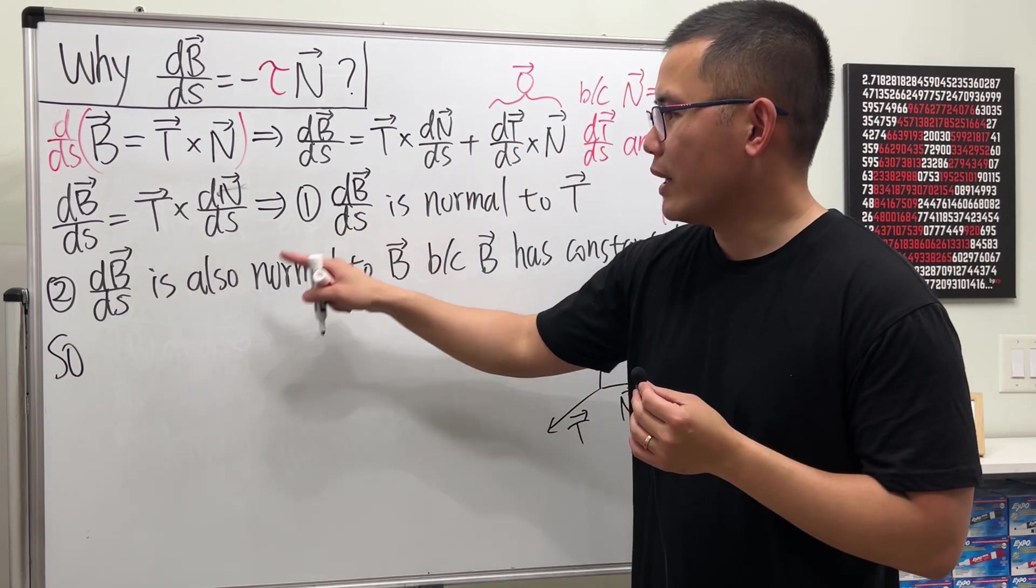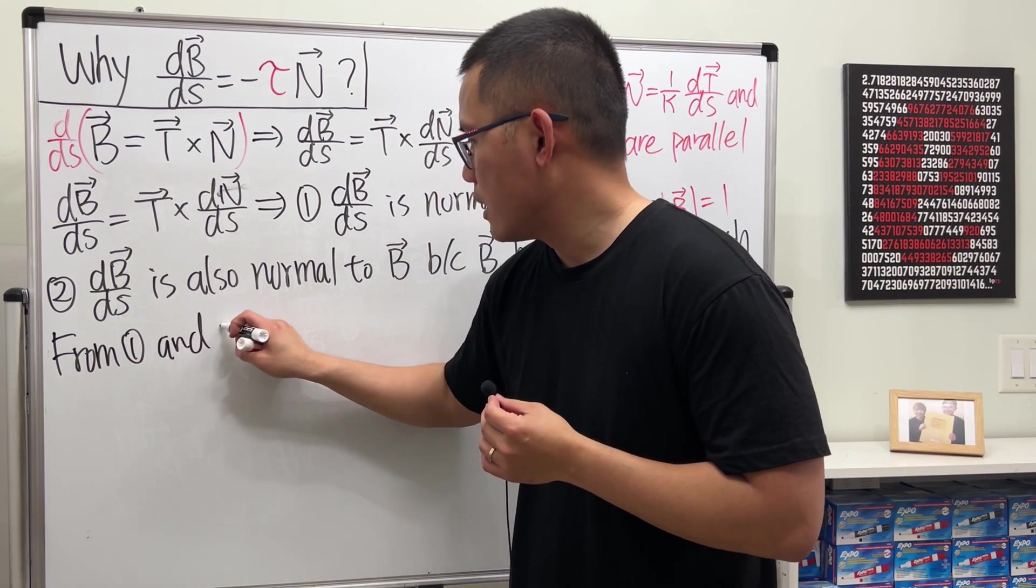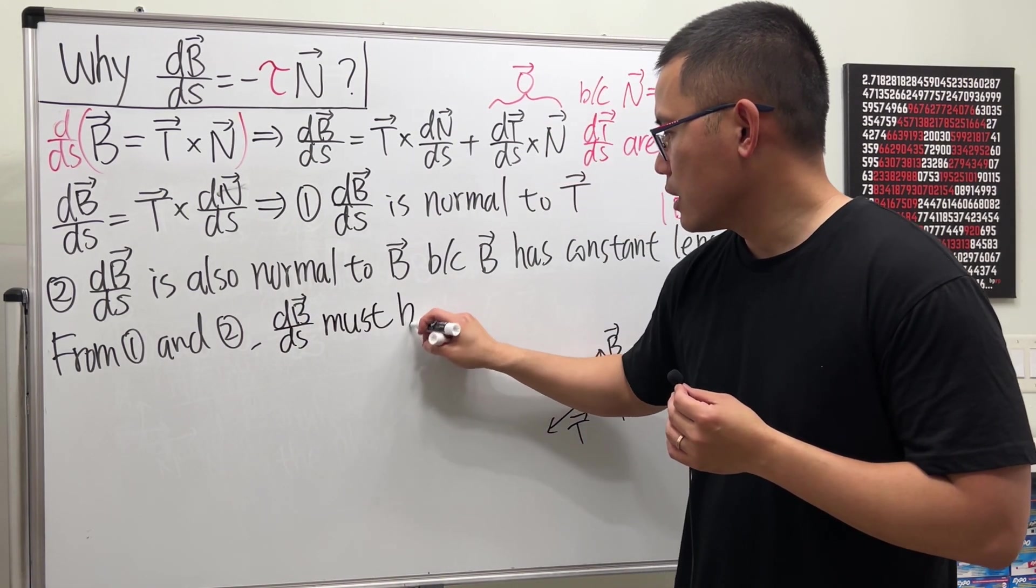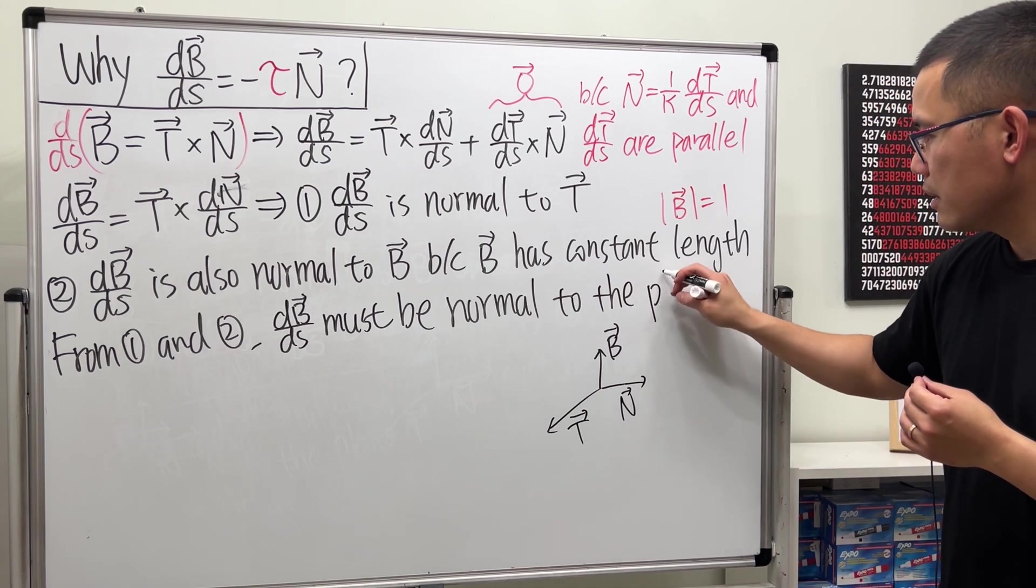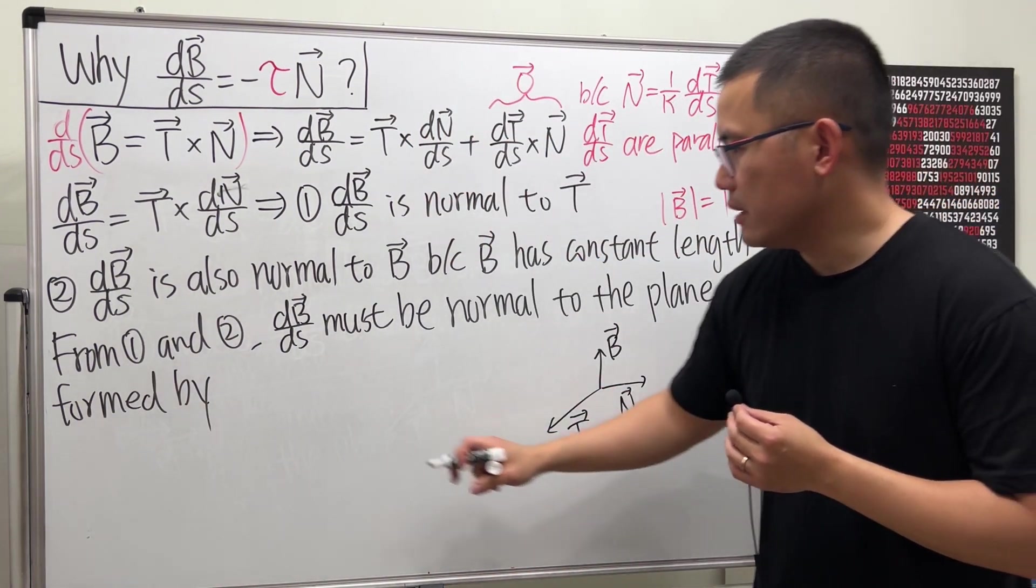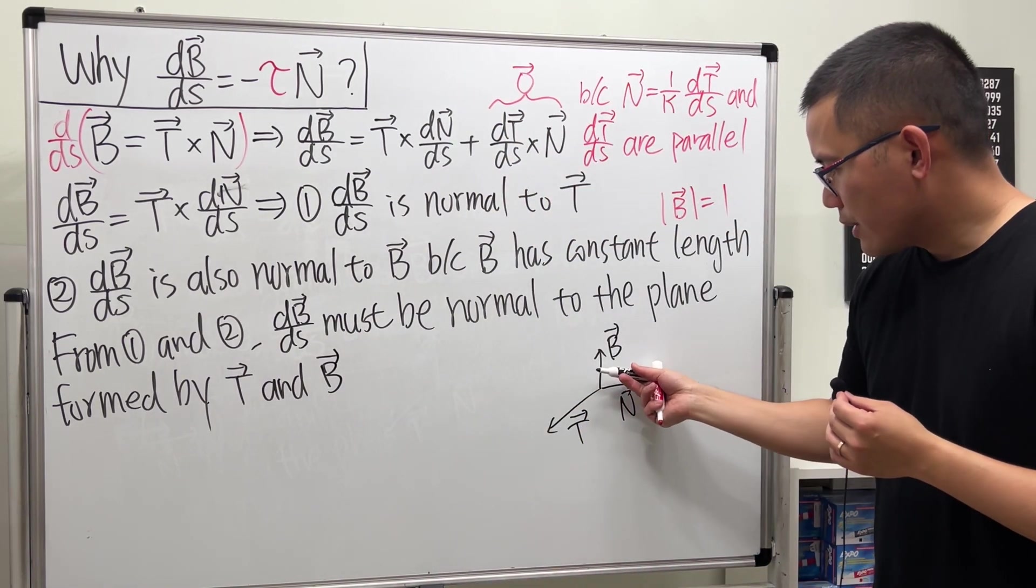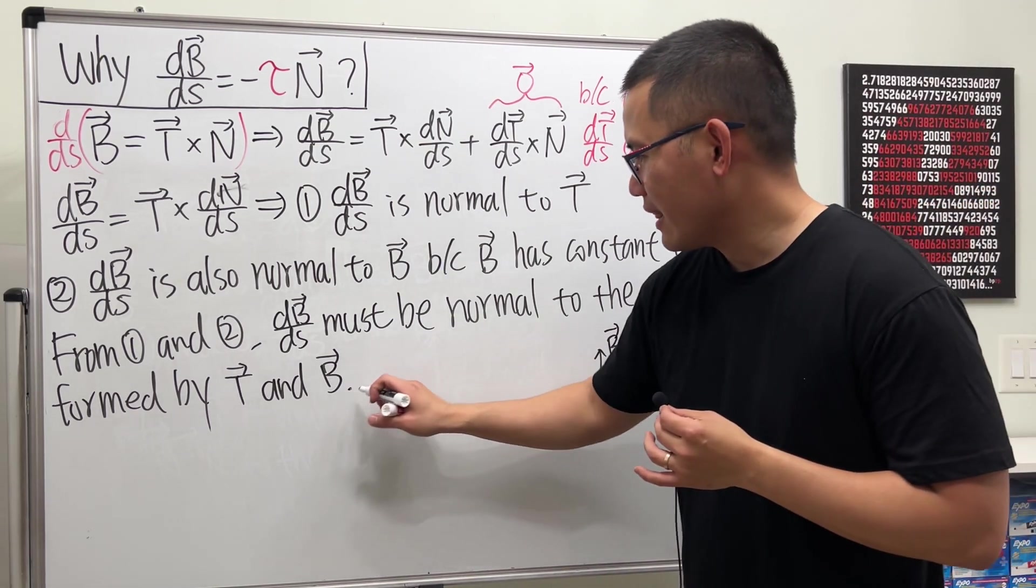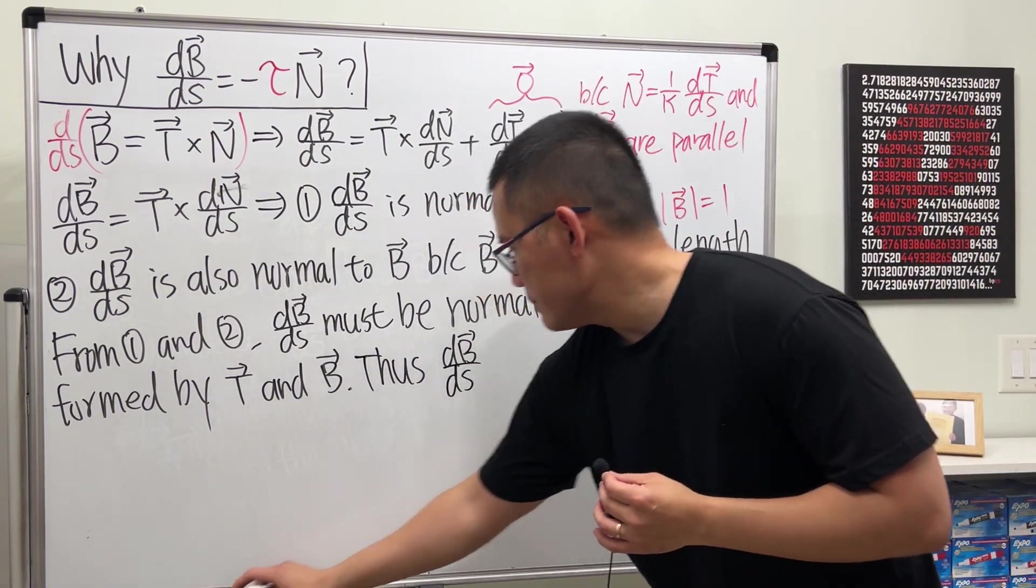So because we have 1 and 2, I will just say from 1 and 2, we know that dB/ds must be normal to the plane formed by vectors T and B. All right, so something like this. What does that mean? That means this must be parallel to N. Thus, we can say that dB/ds must be parallel to N.